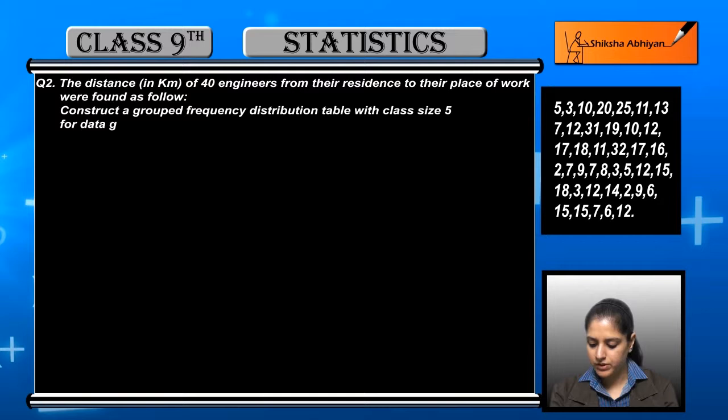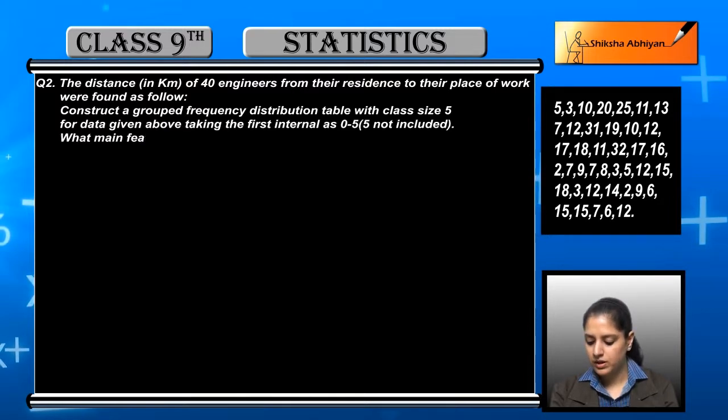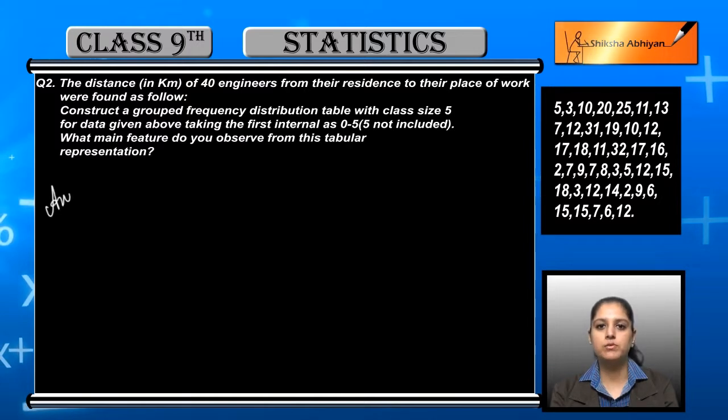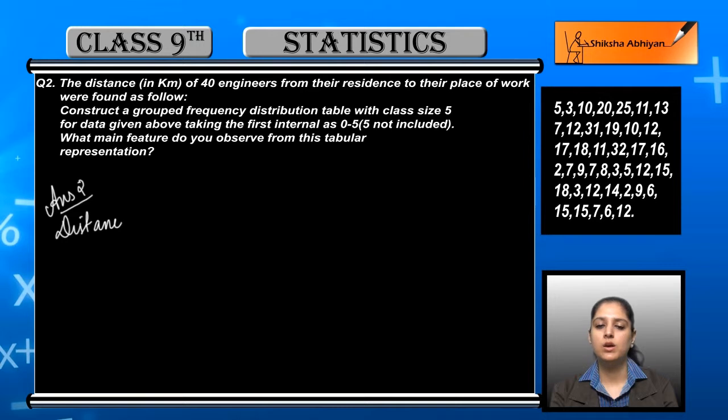Construct a grouped frequency distribution table with class size 5 for the data given above, taking the first interval as 0 to 5 where 5 is not included. What main features do you observe from this tabular representation? We need to create a group frequency table with class size 5, starting from 0 to 5 where the upper limit is not included.